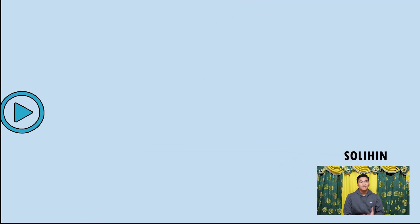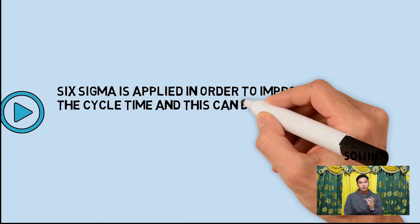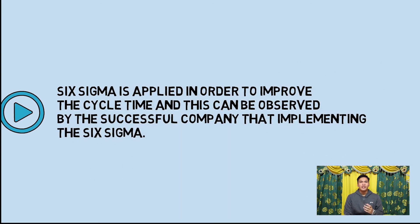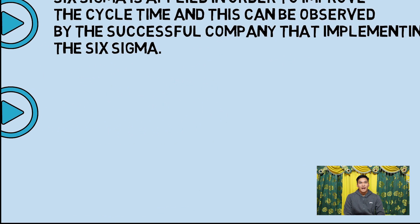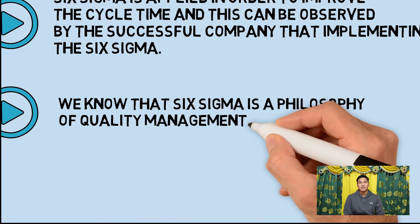As the conclusion, Six Sigma is applied to improve cycle time, and this can be observed by companies that implement Six Sigma. Six Sigma is a philosophy of quality management.